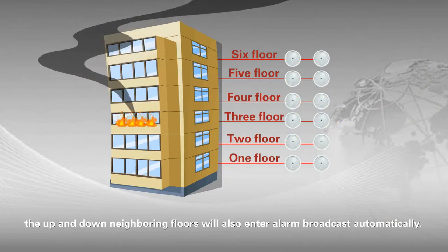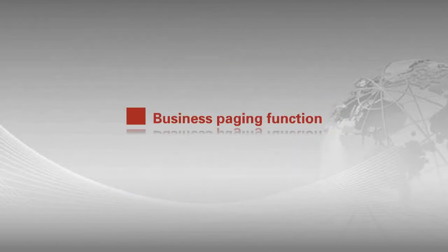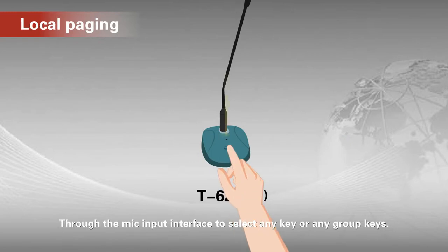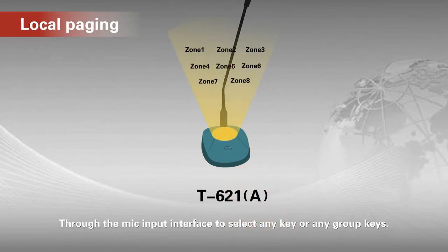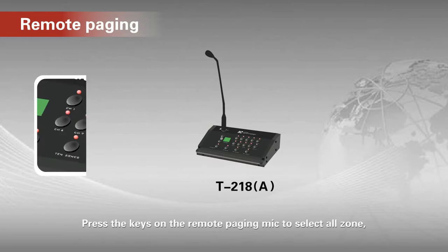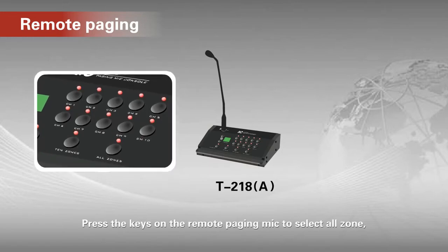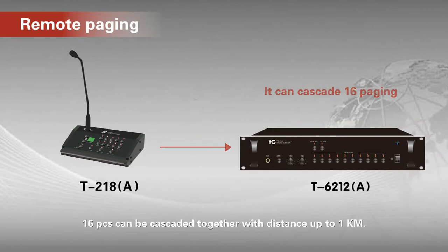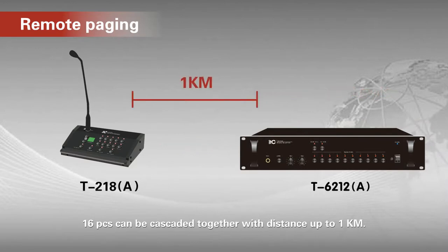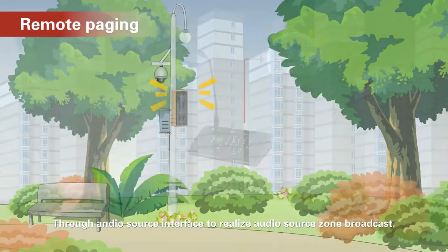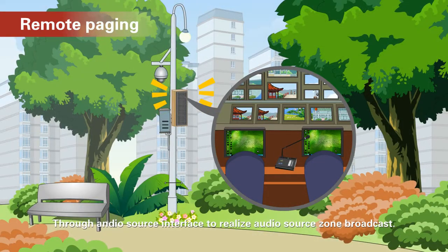Business paging function. Local paging: through the mic input interface, select any key or any group of keys. Remote paging: press the keys on the remote paging microphones to select all zones; 16 pieces can be cast together with distance up to 1000 meters, through the audio source interface for audio source drone broadcast.